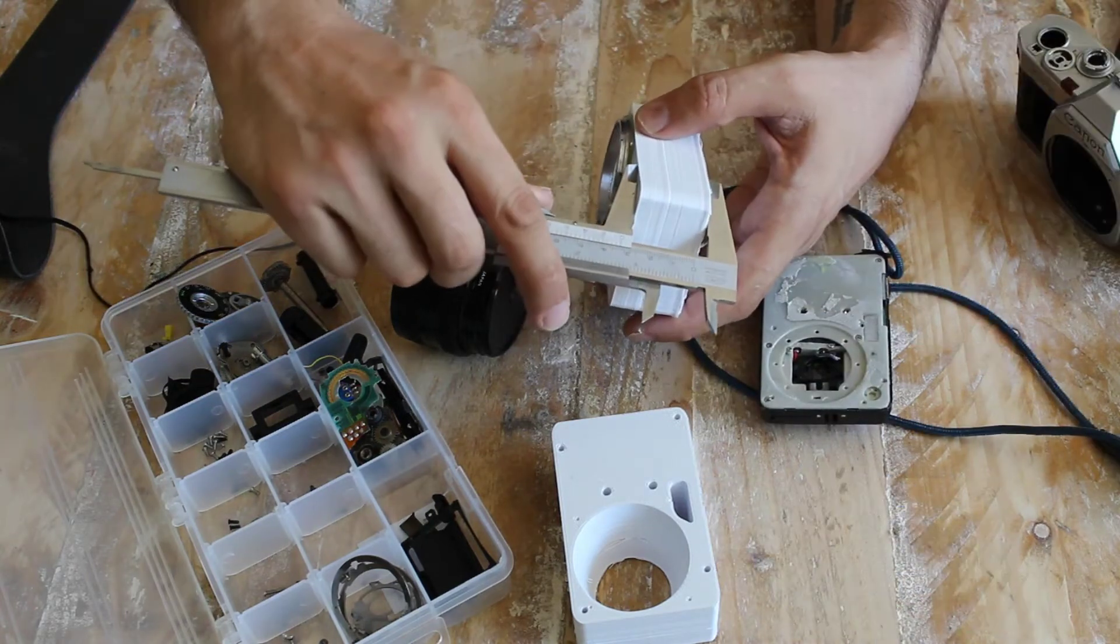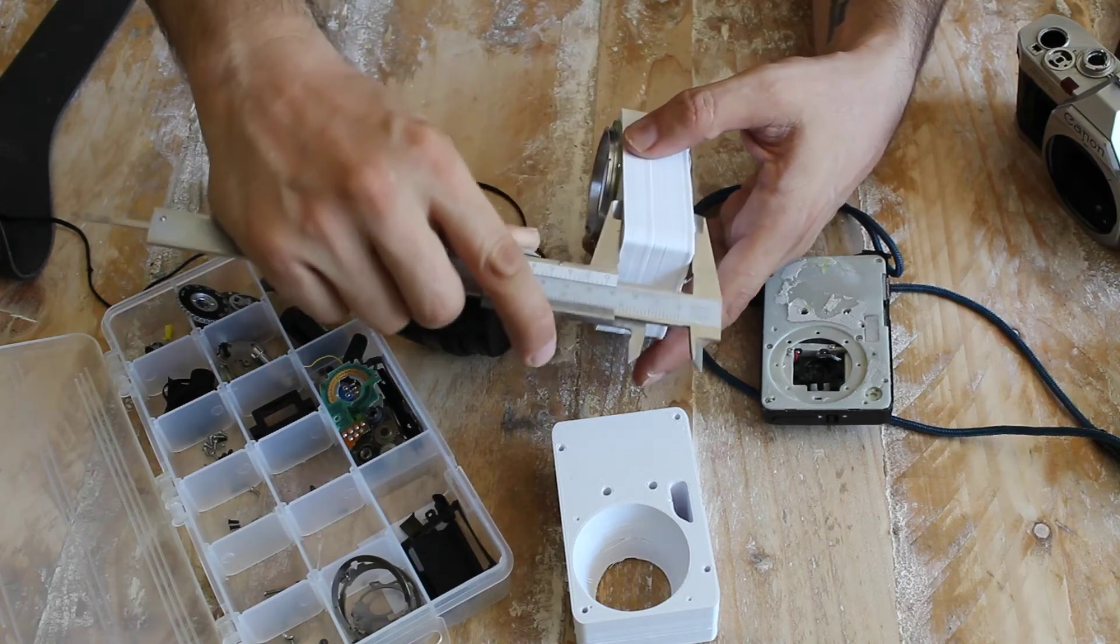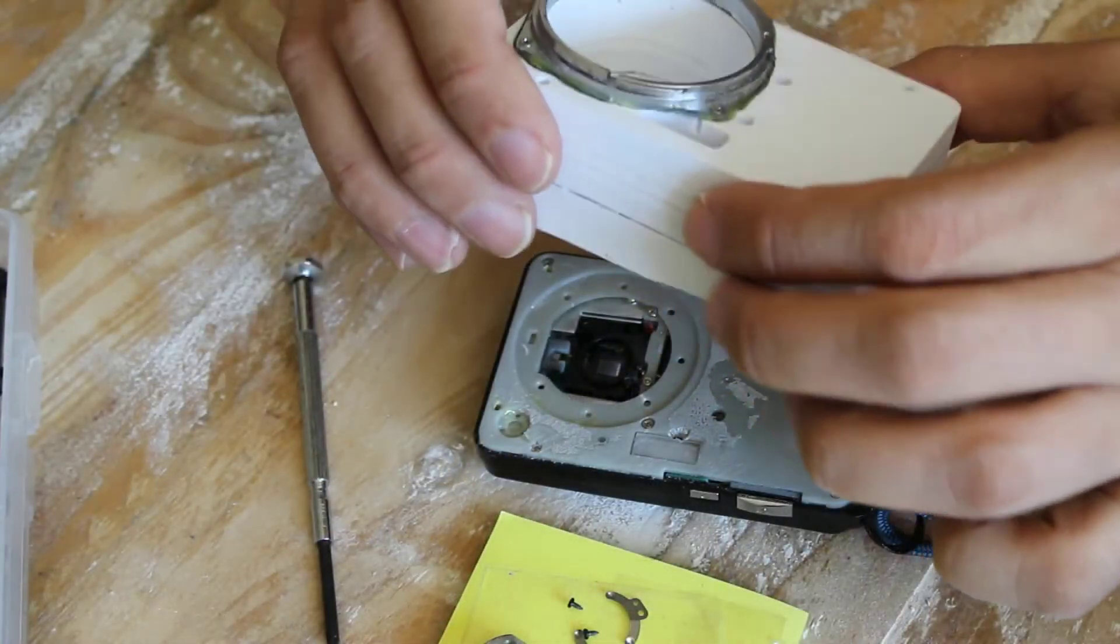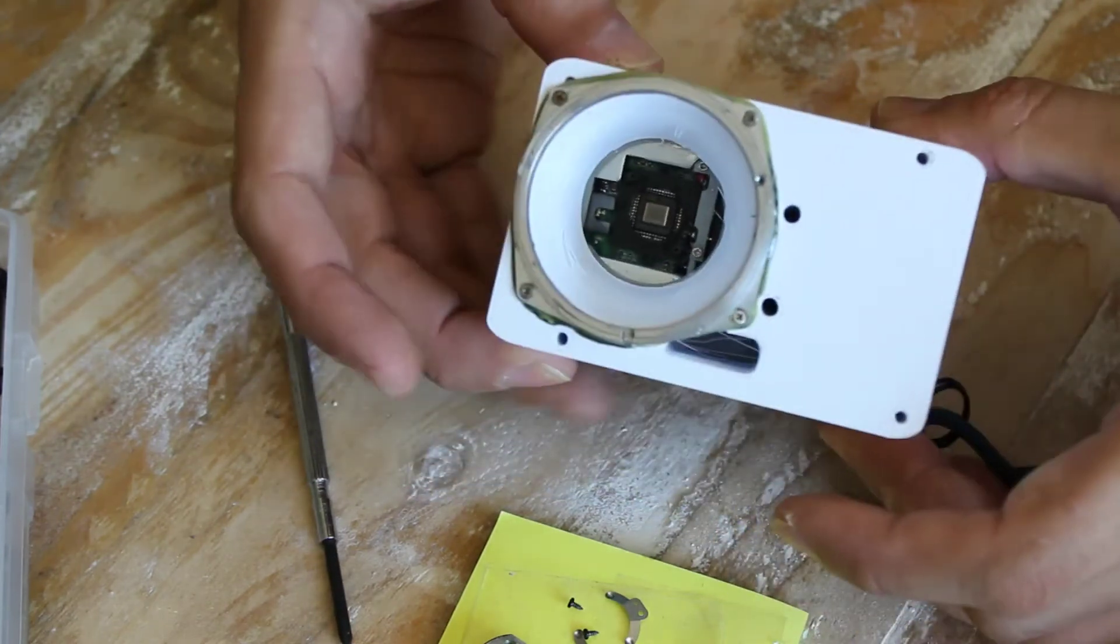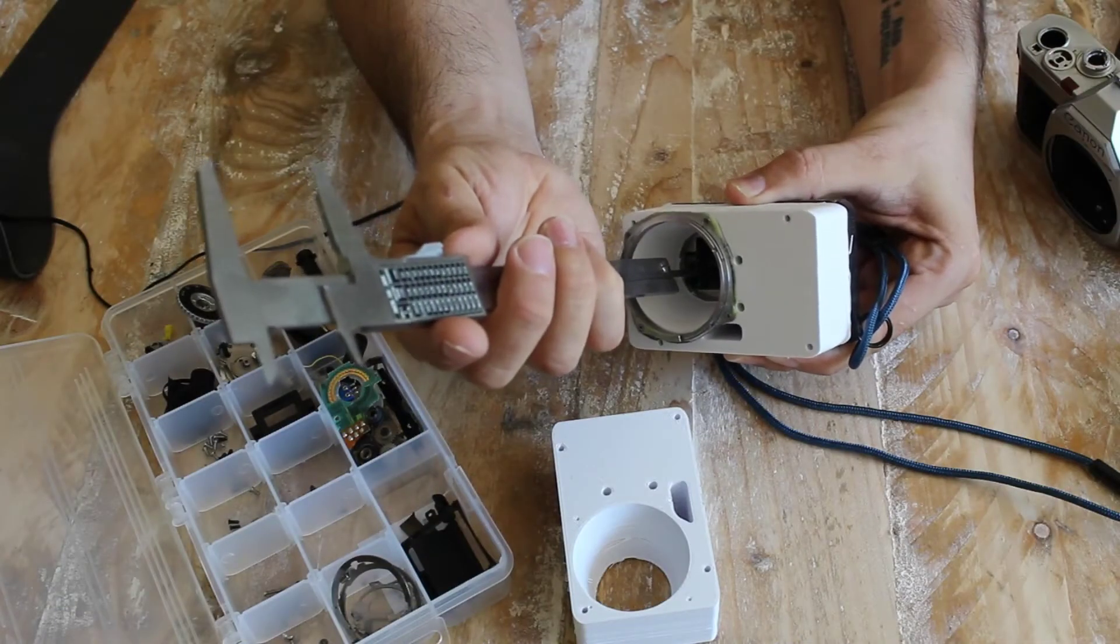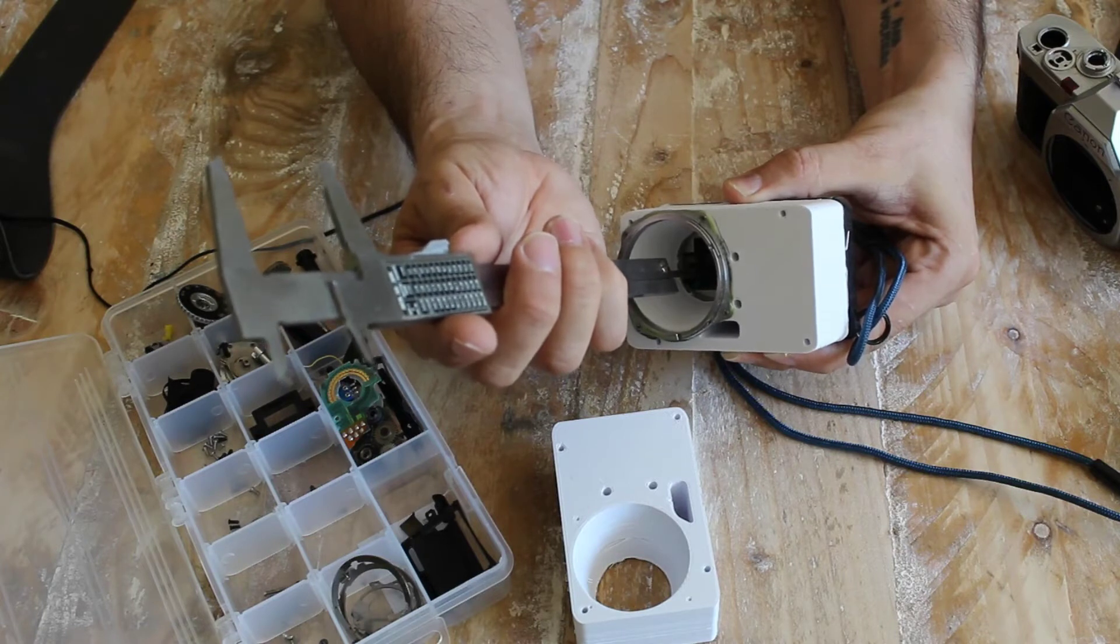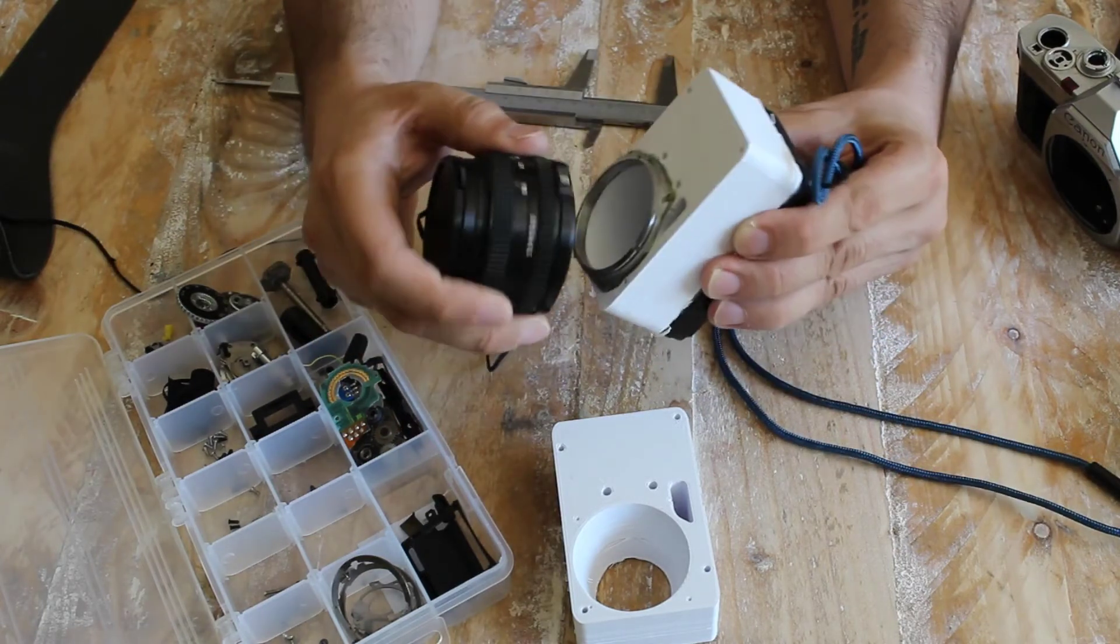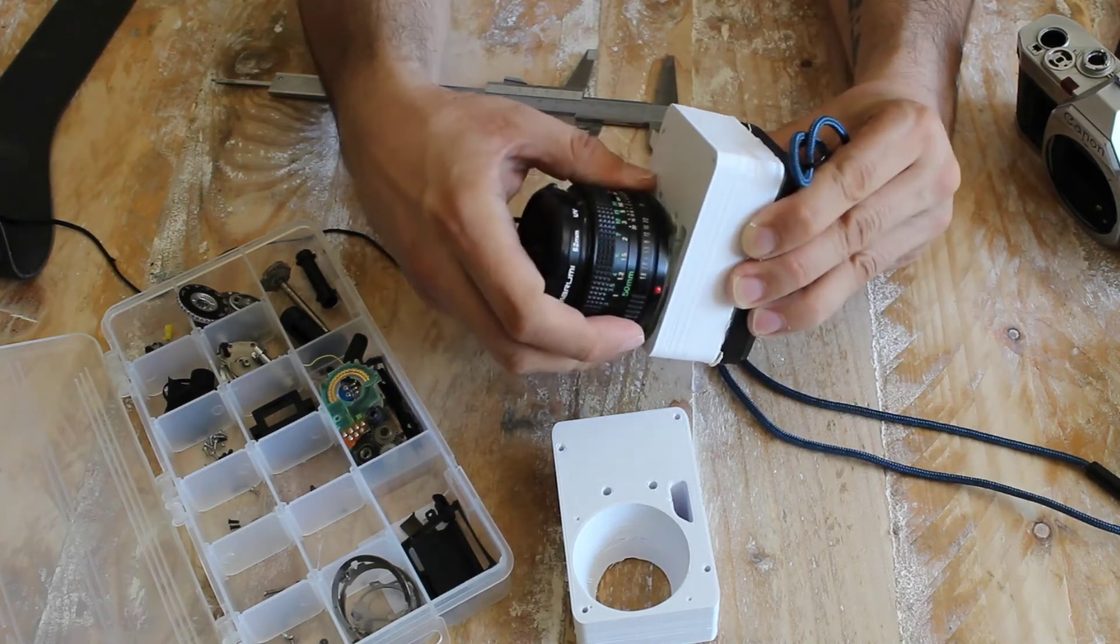I checked the width of the chamber again, it was 32 millimeters, and I placed the two parts together. As you can see the chamber is aligned to the sensor. I measured both parts together and I got 40 millimeters depth that I needed. I was ready to mount the old lens on the new chamber and I saw it fitted really well.